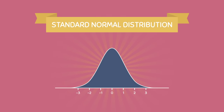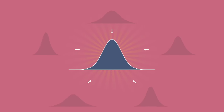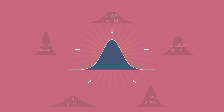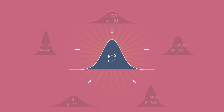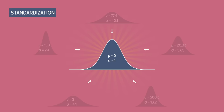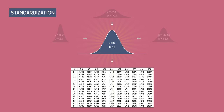The special thing about the standard normal distribution is that any type of normal distribution can be transformed into it. In other words, any normal distribution with any value of mu and sigma can be transformed into the standard normal distribution, where you have a mu of 0 and a standard deviation of 1. This conversion process is called standardization. The benefit of standardization is that it allows us to use the z-score table to calculate exact areas for any given normally distributed population with any value of mu or sigma.